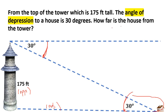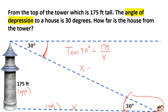How far is the house from the tower? This distance is x. Using adjacent and opposite we can use tangent. Tangent 30 degrees equals opposite over adjacent: 175 over x. Cross multiplication gives x equals 175 divided by tangent 30 degrees.